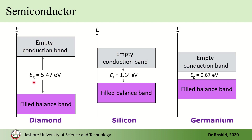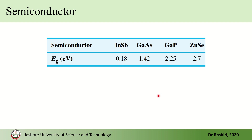For diamond, the band gap is about six electron volts. For silicon — the semiconductor we shall talk about most, and which is the basis of most devices — the band gap is 1.14 electron volts. For germanium the band gap is about 0.7 electron volts. For indium antimonide it is 0.18, and for gallium arsenide, another very common semiconductor, it is 1.42 electron volts.